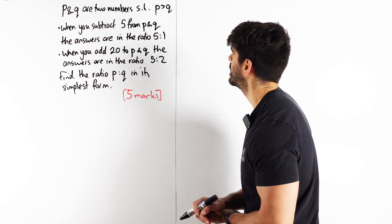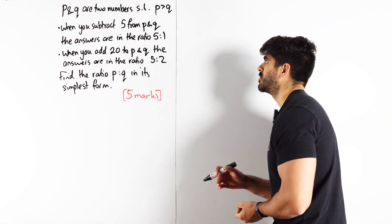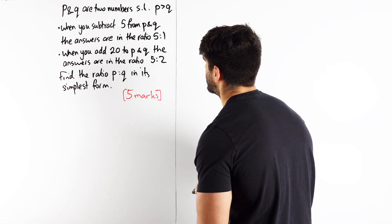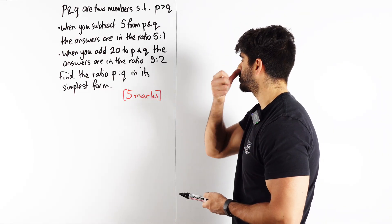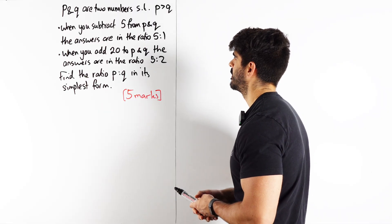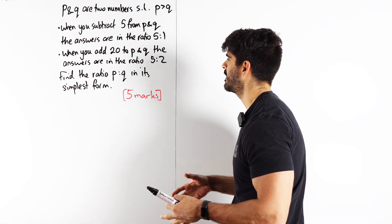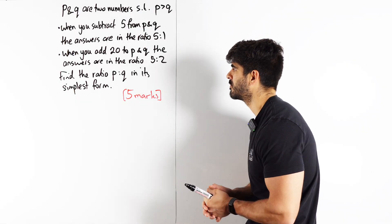P and Q are two numbers such that P is greater than Q. When you subtract 5 from P and Q, the answers are in the ratio 5 to 1. When you add 20 to P and Q, the answers are in the ratio 5 to 2. Find the ratio P and Q in its simplest form.